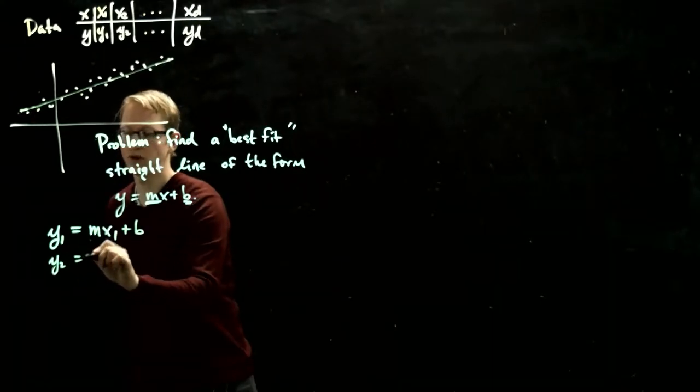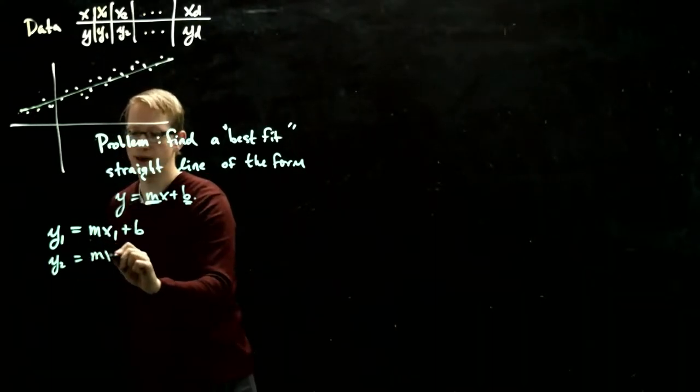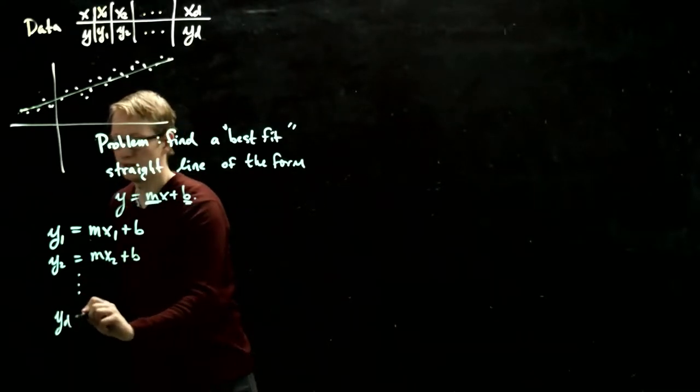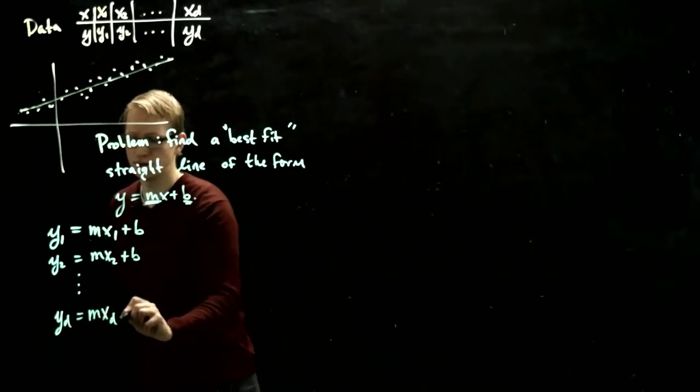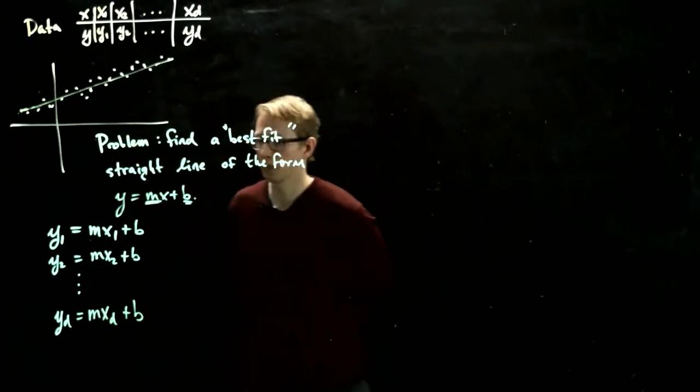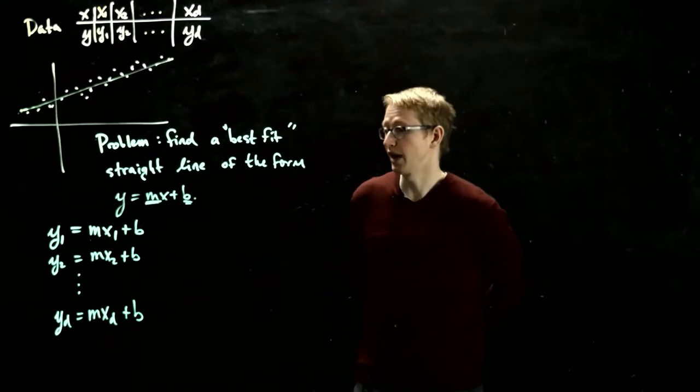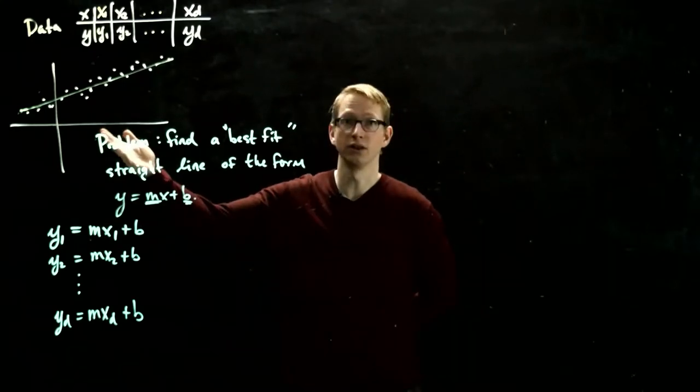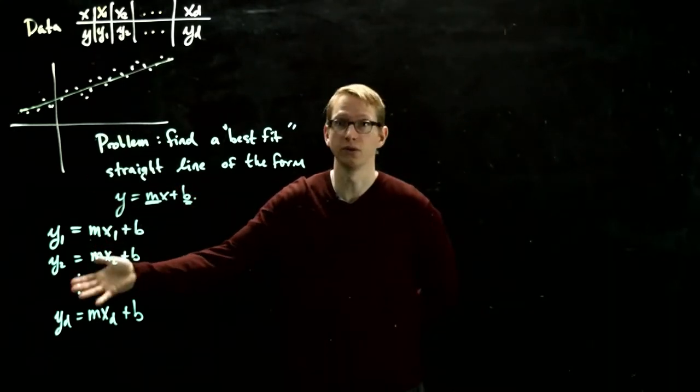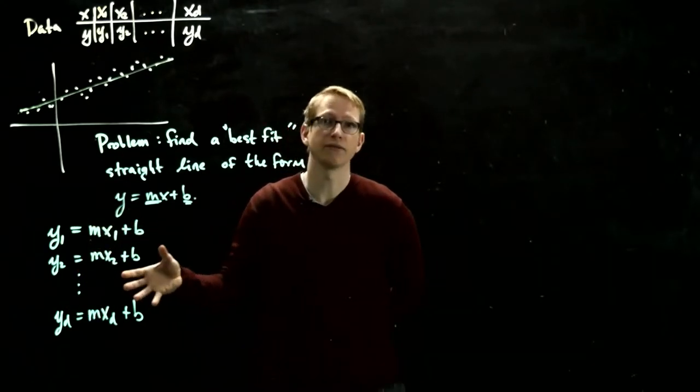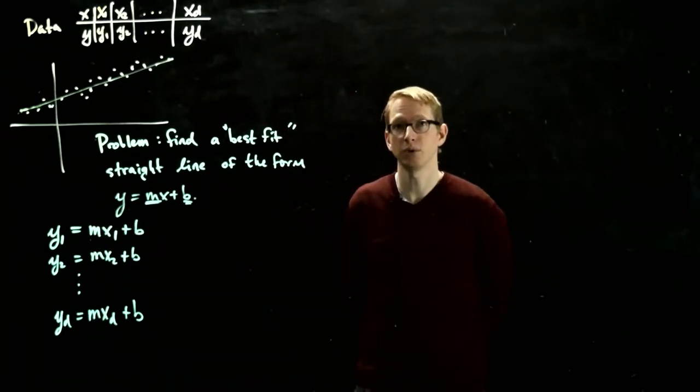Similarly for y2, our second data point, mx2 plus b, and we keep going, yd equals mxd plus b. Now, in general, this is an over-constrained system because we have d equations, and if d is relatively large, in particular if it's bigger than 2, it's very unlikely for us to find a solution to this problem.